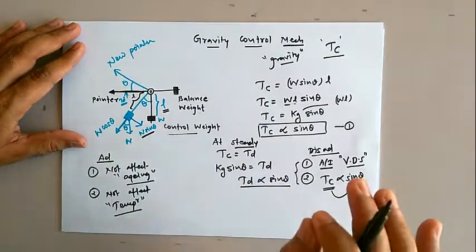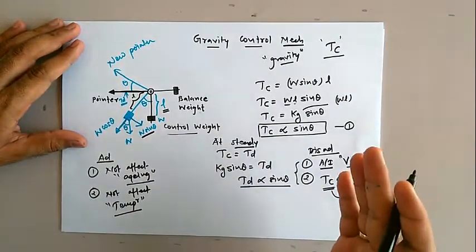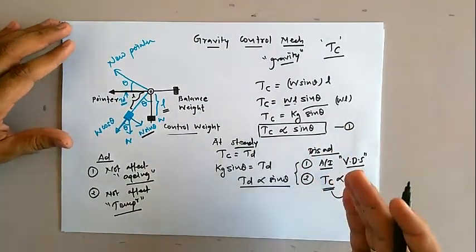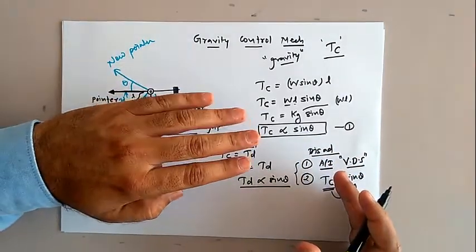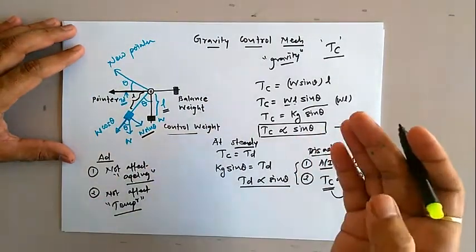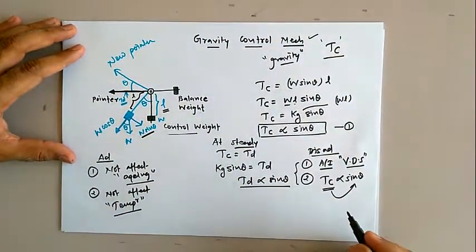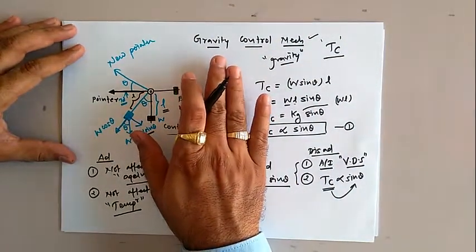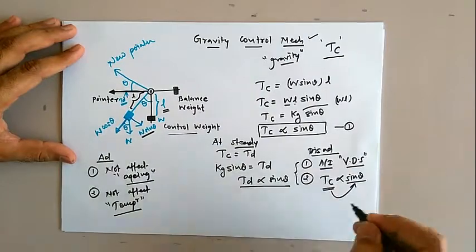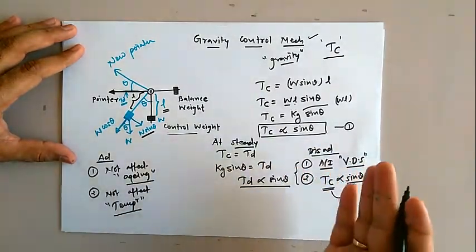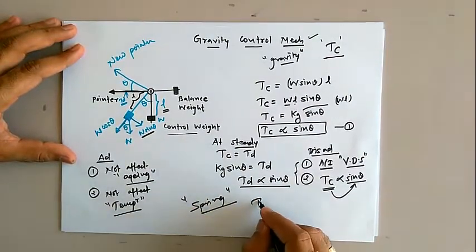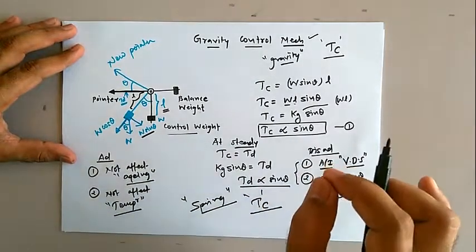That is the reason that in most cases, since we do not know the exact application of the analog instrument — the consumer may use it on a vertical or horizontal plane — we need to implement spring control mechanism rather than gravity control mechanism. Also, because in gravity control the controlling torque is non-linearly related to the deflection angle theta, spring control mechanism is preferred to fulfill the requirement of controlling torque for any analog instrument.